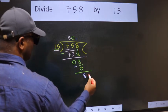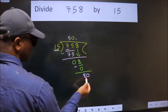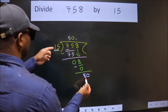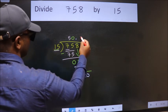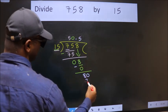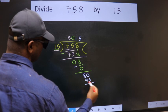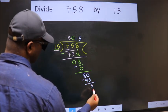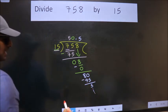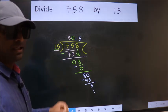So now we can put dot and take zero. 80—a number close to 80 in 15 table is 15 fives 75. Now we subtract, we get 5, and you continue the division. I am not doing that.